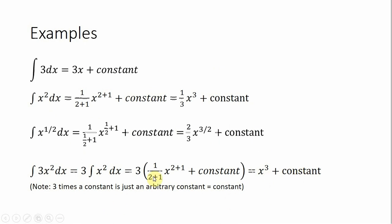One thing to note: 3 times a constant is just an arbitrary constant, so we just call it a constant. We could check our answer — if we take the derivative of x³ plus a constant, we get 3x squared, and the derivative of a constant is 0, so we get back what we're trying to integrate in the first place.